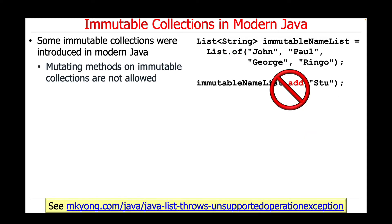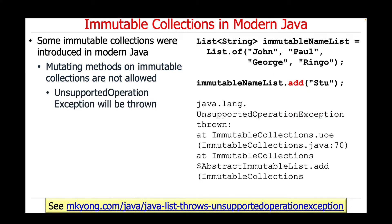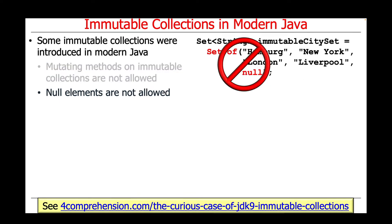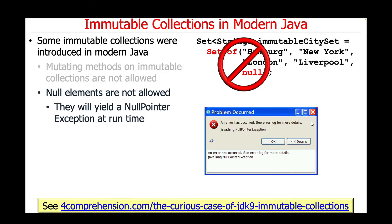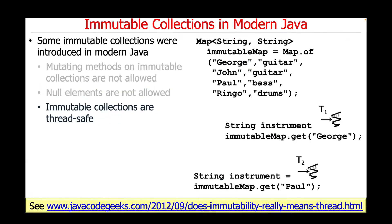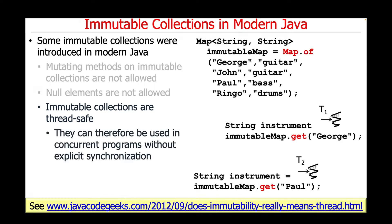Calling mutating methods on immutable collections is not allowed. In particular, if you try to call the add method on an immutable list, an UnsupportedOperationException will be thrown. Likewise, null elements are not allowed in immutable collections. If you try to add a null element to an immutable set, you get a NullPointerException at runtime. In addition, immutable collections are thread safe.